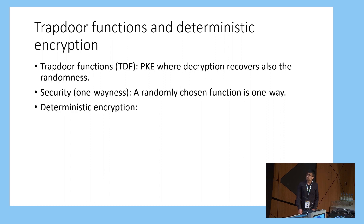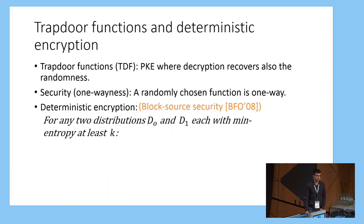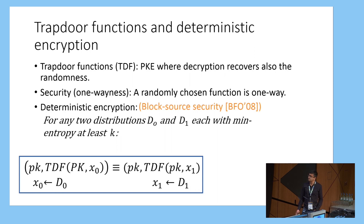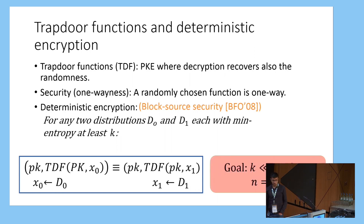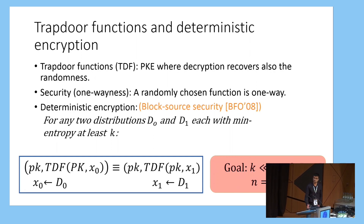For deterministic encryption, we require a weaker property than what you heard in the previous talk. Namely, we require block source security. That basically says that for any two input distributions D0 and D1, each with min entropy at least K, the deterministic encryption of a sample from D0 should be computationally indistinguishable from the deterministic encryption of a random sample from D1. And ideally, we want K to be as small as possible, and in particular much smaller than the bit length of the input.